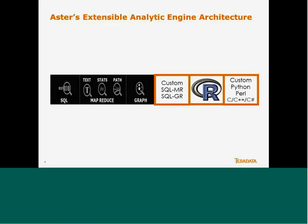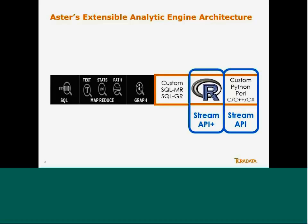R is just one of the different ways, and it's a special way because Aster has made investments in R integration. We can use the stream API path that exists for basically any code that can be executed at the command line — some examples would be Python, Perl, and the C family. We can use the stream interface with R, but there are other architectures being designed for integrating R with Aster; today we're just focusing on the stream API.